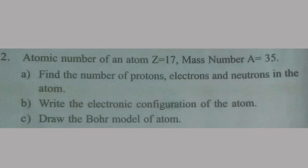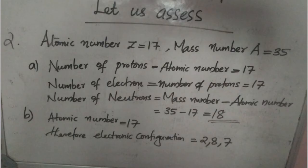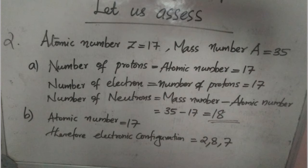Atomic number means number of protons, so the number of protons is 17. We know that the number of electrons and number of protons in each atom are the same, therefore the number of electrons is also 17. Number of neutrons equals mass number minus atomic number: 35 minus 17 equals 18.